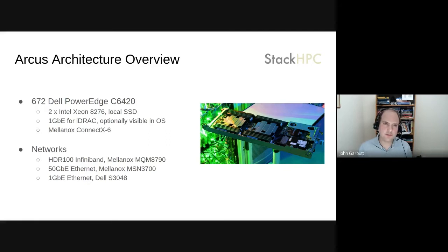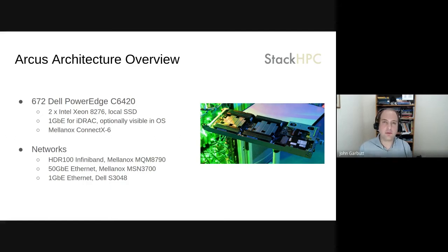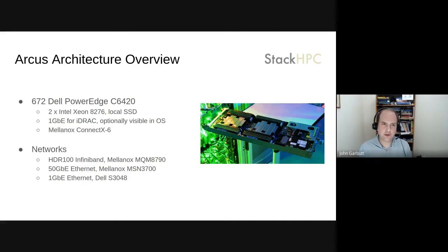Here are notes on the hardware. We're using Dell PowerEdge C6420 servers - basically four dual-socket machines within a 2U footprint. For networking, there's a 1 GbE NIC that can be dedicated for the out-of-band management network, which can optionally also be visible inside the OS. The main networking is a Mellanox ConnectX-6 card - one port used as HDR100 InfiniBand on an HDR200 switch with a breakout cable, and a very similar setup for Ethernet with a 100 GbE switch breaking out to two 50 GbE ports. So there's 100 GbE InfiniBand and 50 GbE Ethernet on every server.